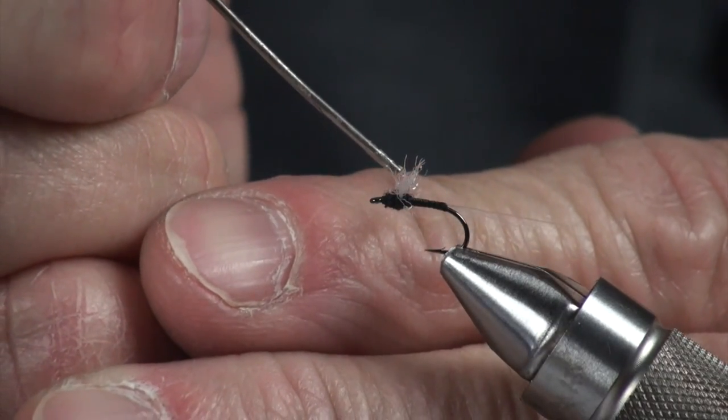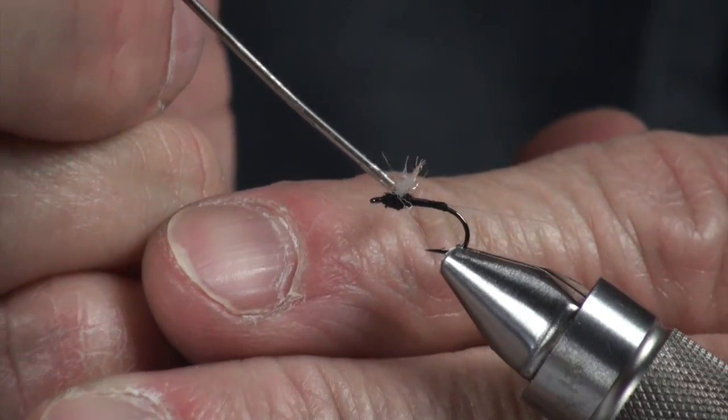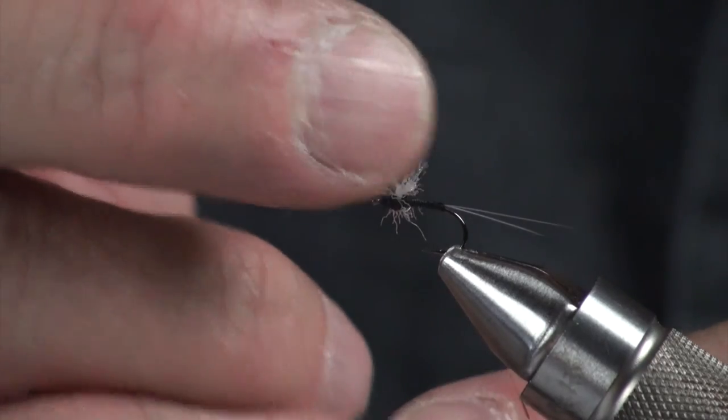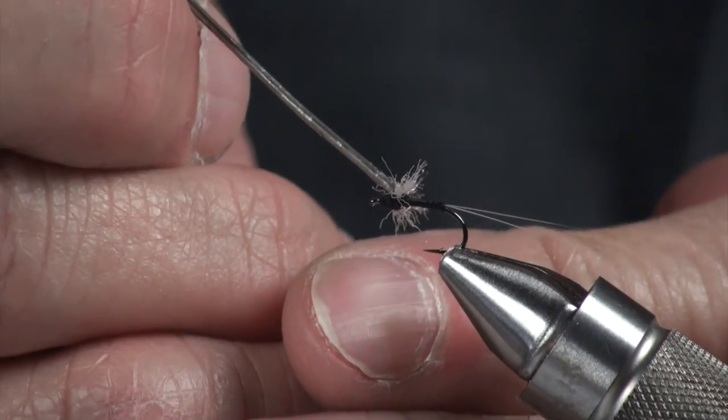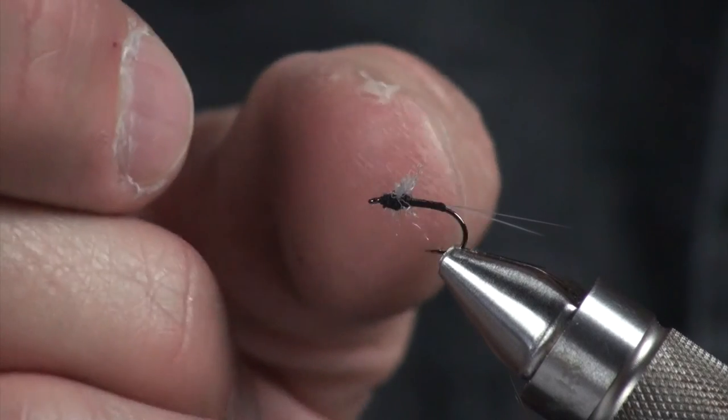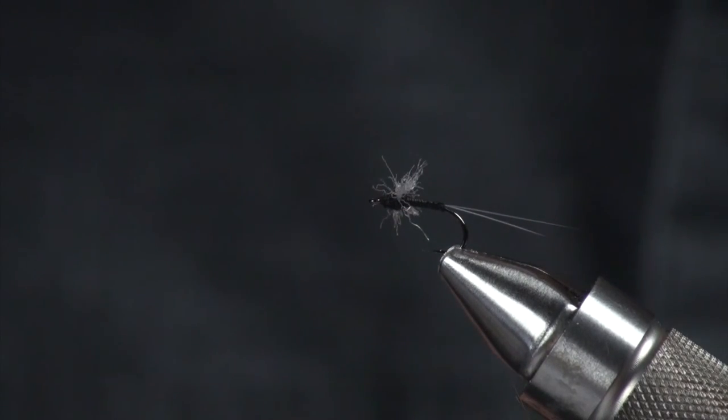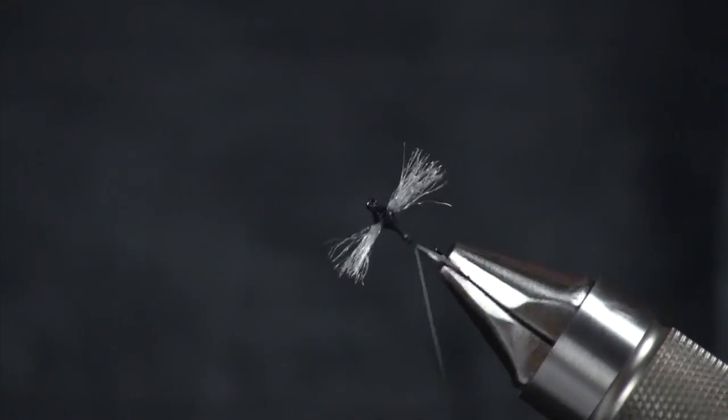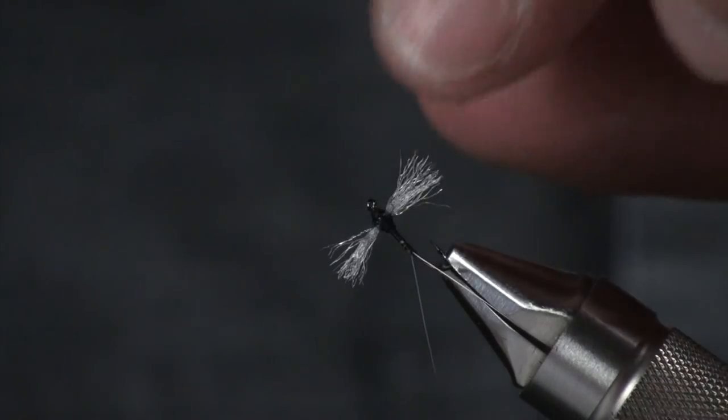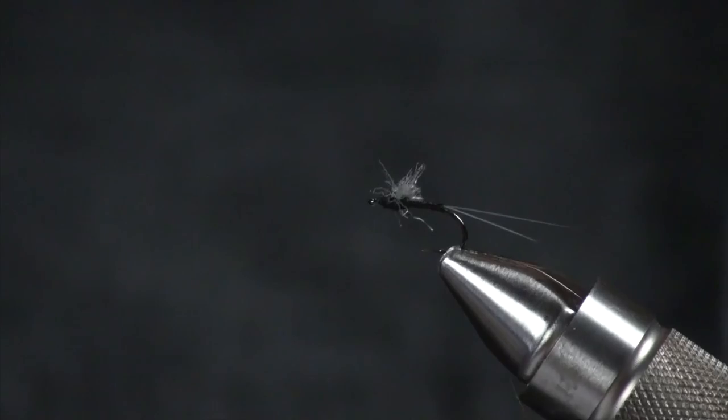What they'll do is they'll come in here with a little bit of, I'm just going to use head cement just so you can kind of see this. But a lot of guys will put actual zap-a-gap in there, making that wing really stiff and keeping that profile throughout as they nymph it.